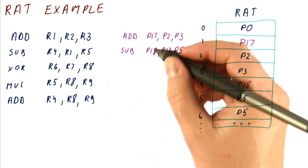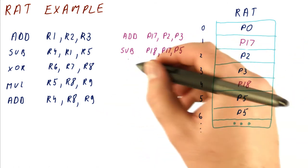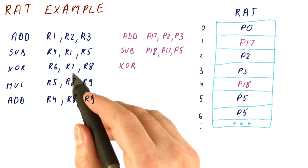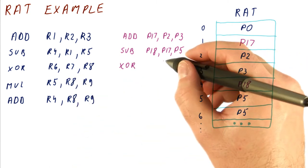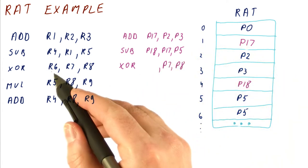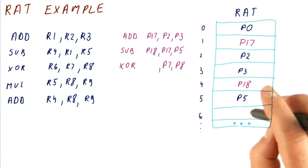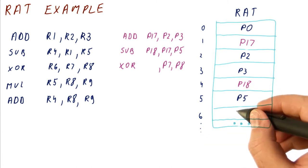So I've added three more instructions, and now we can rename them too. So this XOR will be renamed into an XOR of R7 and R8. Where are they? Well, let's say they're in P7 and P8, and then we're going to write to R6. We're not going to write to P5. That's where the previous value of R6 is. We're going to write it to a new register, P19.